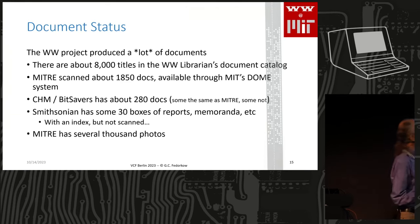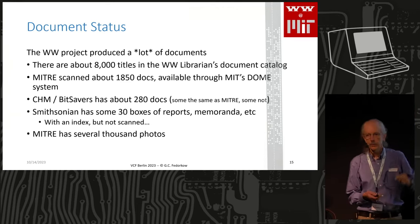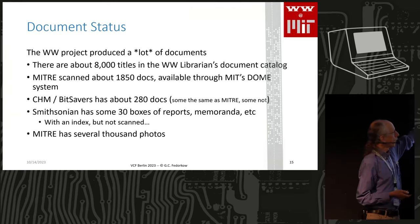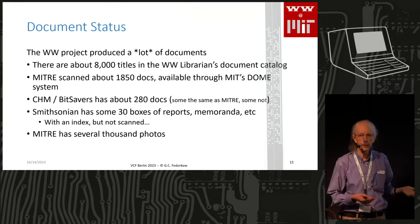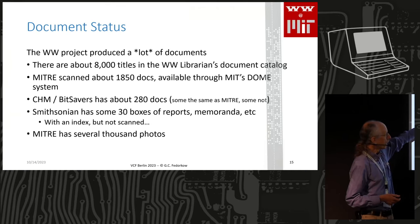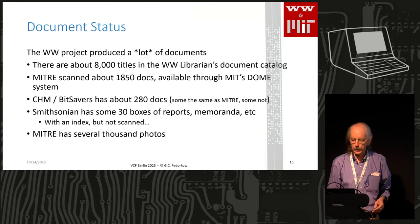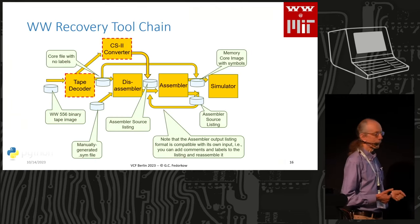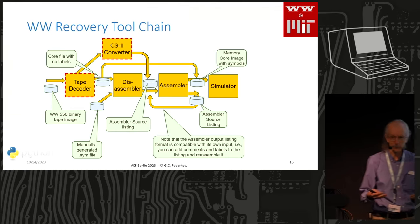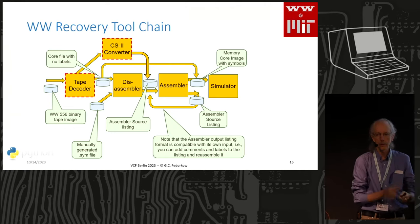There are 8,000 document titles. About 1,800 are on MIT's site; Al Kossow has about 280 on Bitsavers, some of which are unique to his site. The Smithsonian has 30 boxes of these documents — I have an index and have looked at some of them, but that's a lot of material. There was also a Whirlwind project photographer who spent the better part of a decade taking pictures of everything in the lab.